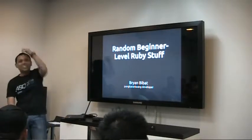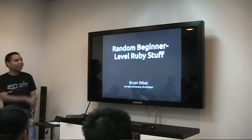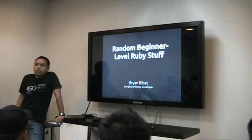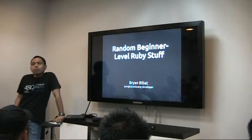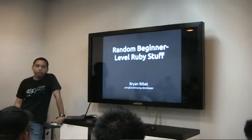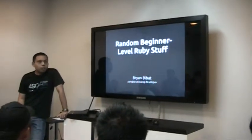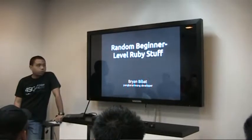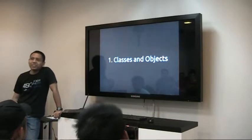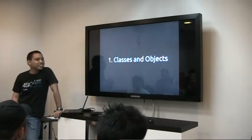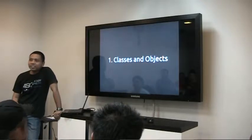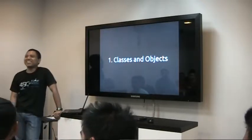Feel free to comment or whatever. This is a beginner-level talk. Usually in meetups there should be one, but in most of our meetups we usually start with intermediate-level stuff. So let's start off with some basic stuff — what was suggested earlier today: classes and objects. Who here are beginners in Ruby?